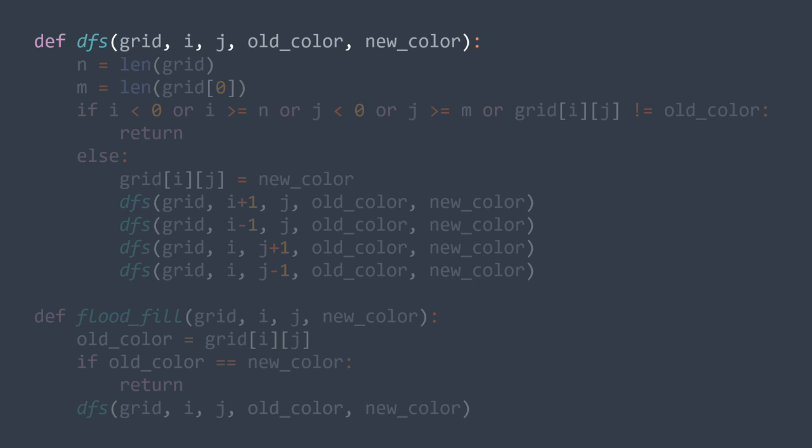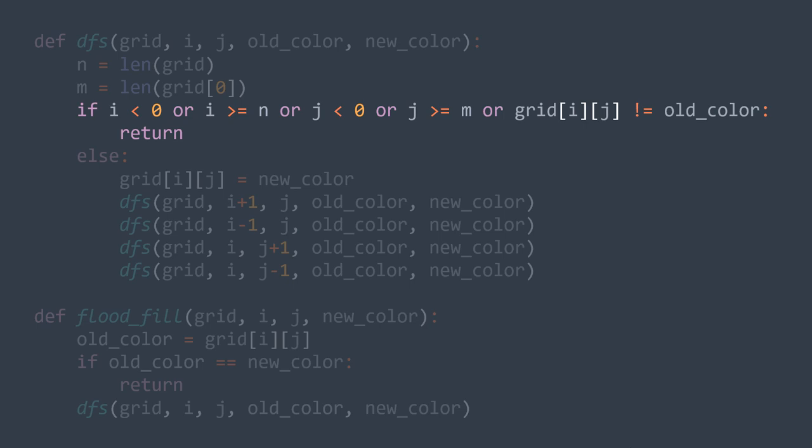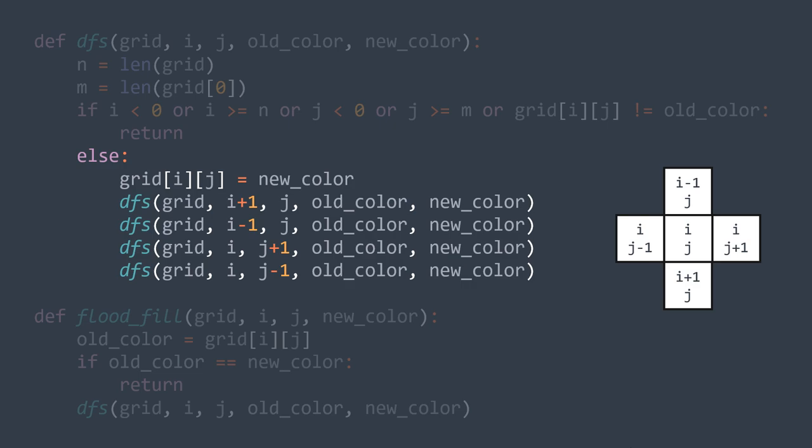We said that we have 6 base cases, but we can put them in one condition separated with OR operators. We write: if i is 0, or i is greater than or equal to N, or g is 0, or g is greater than or equal to M, or the value of the actual cell isn't equal to the one we're replacing — we directly exit, we do nothing. Else, the recursive case: we replace the value of the actual cell with the new one and call the function 4 times — once with (i+1, g) to go to the bottom, once with (i-1, g) to go to the top, once with (i, g+1) to go to the right, and once with (i, g-1) to go to the left.